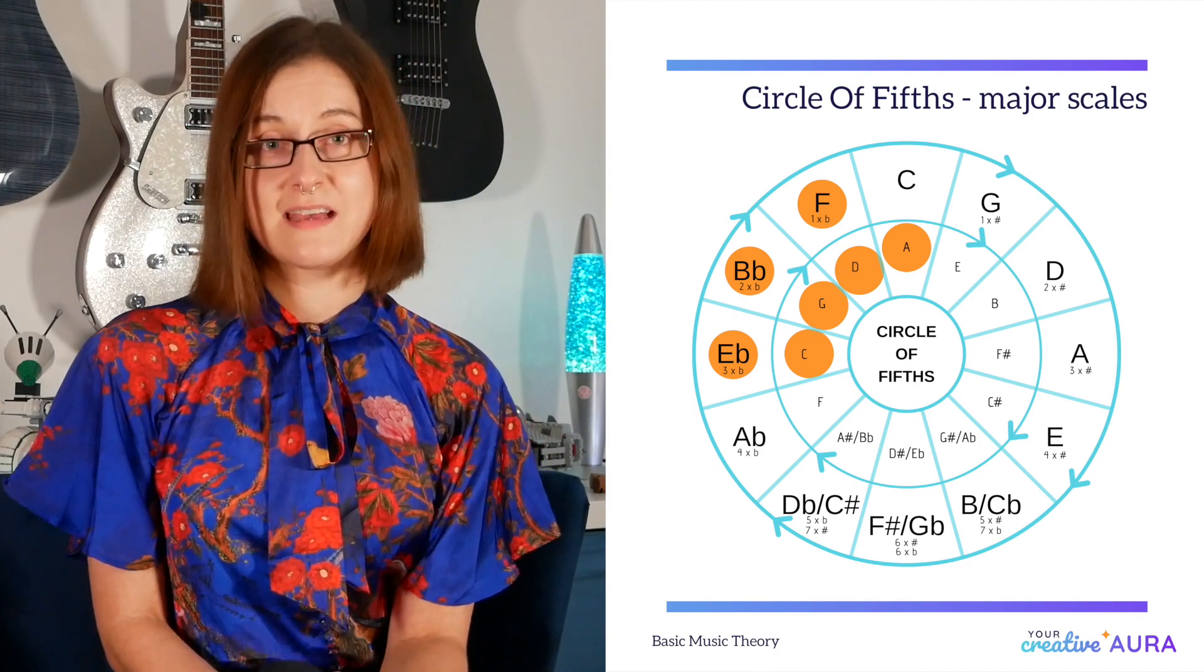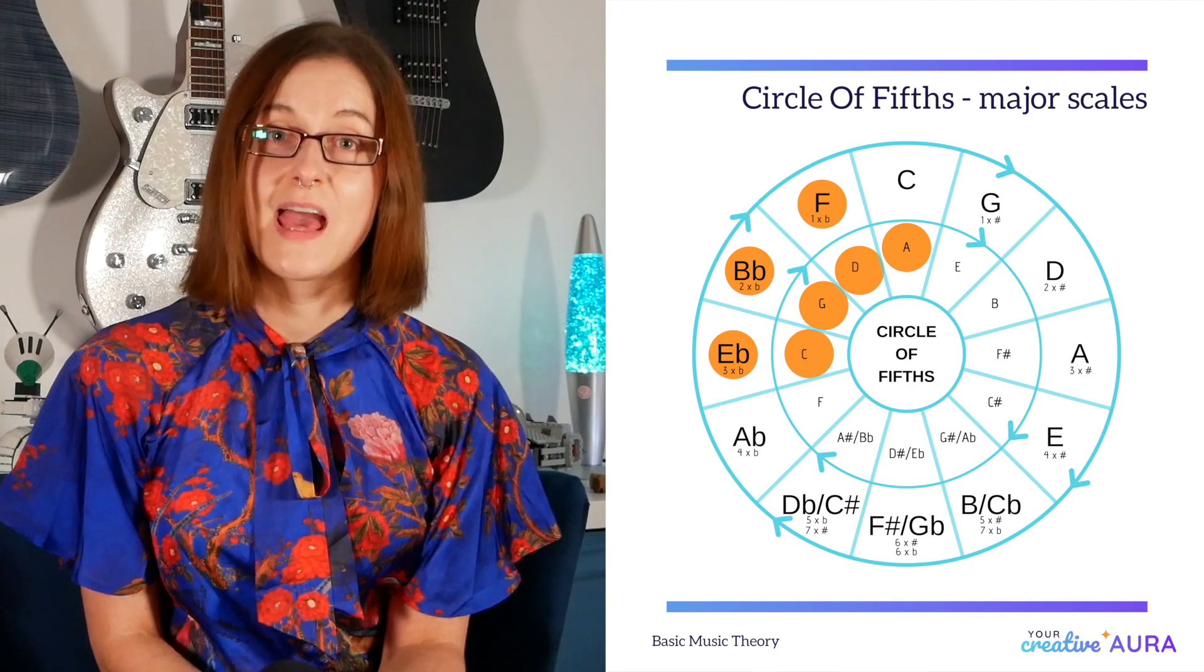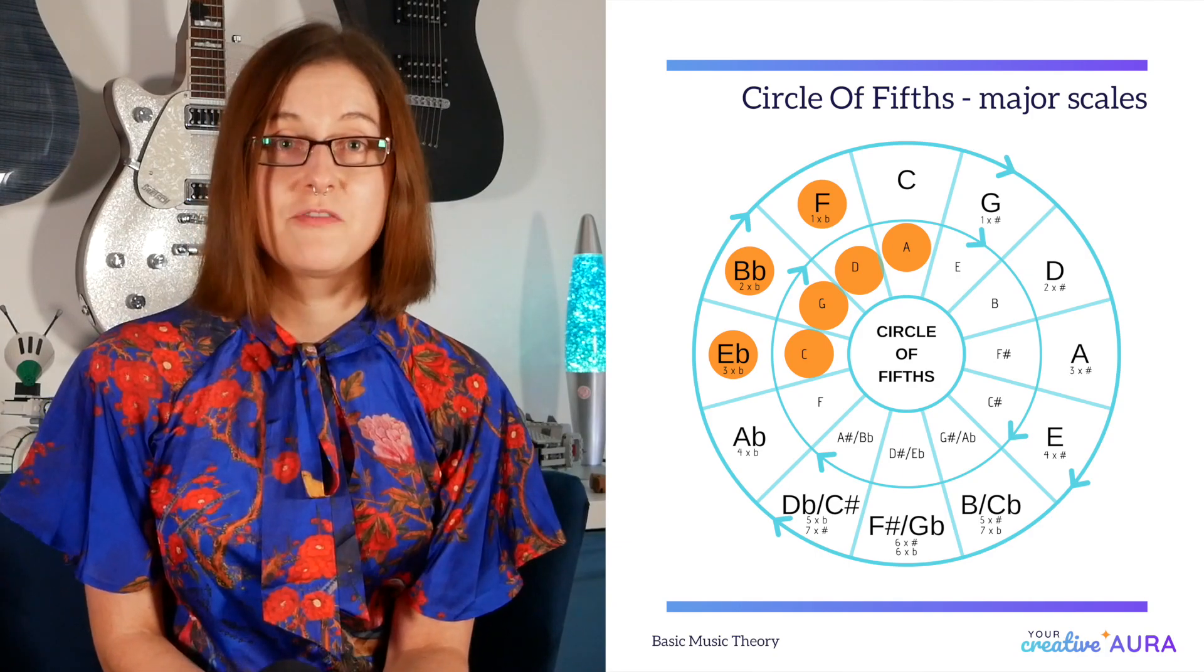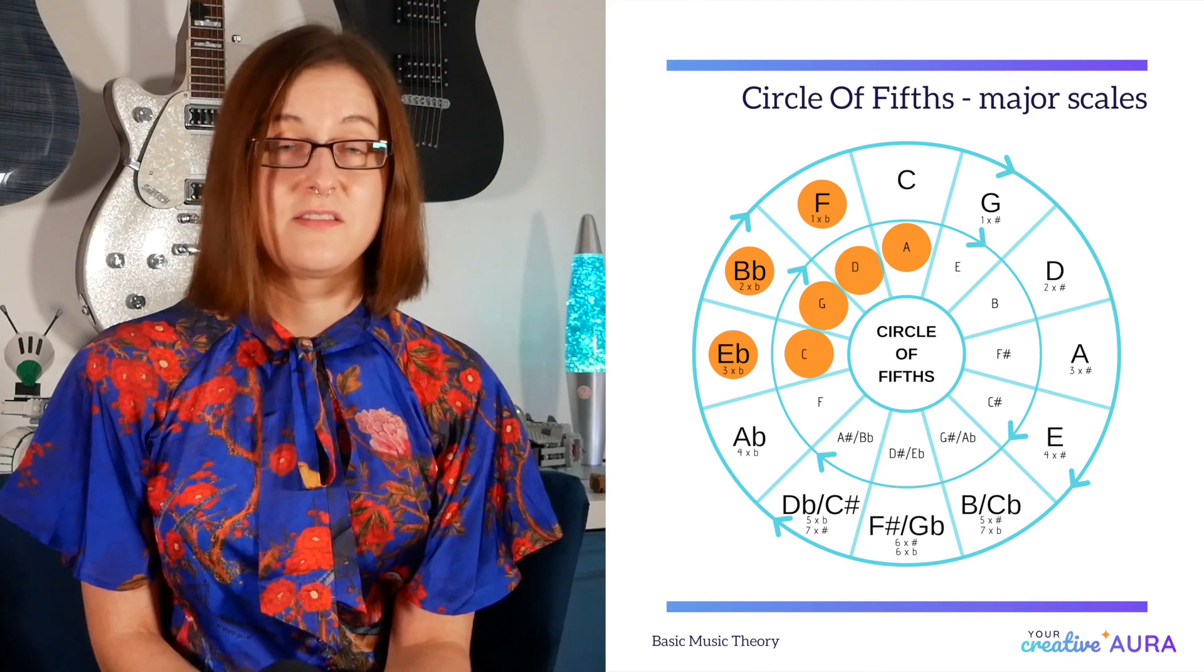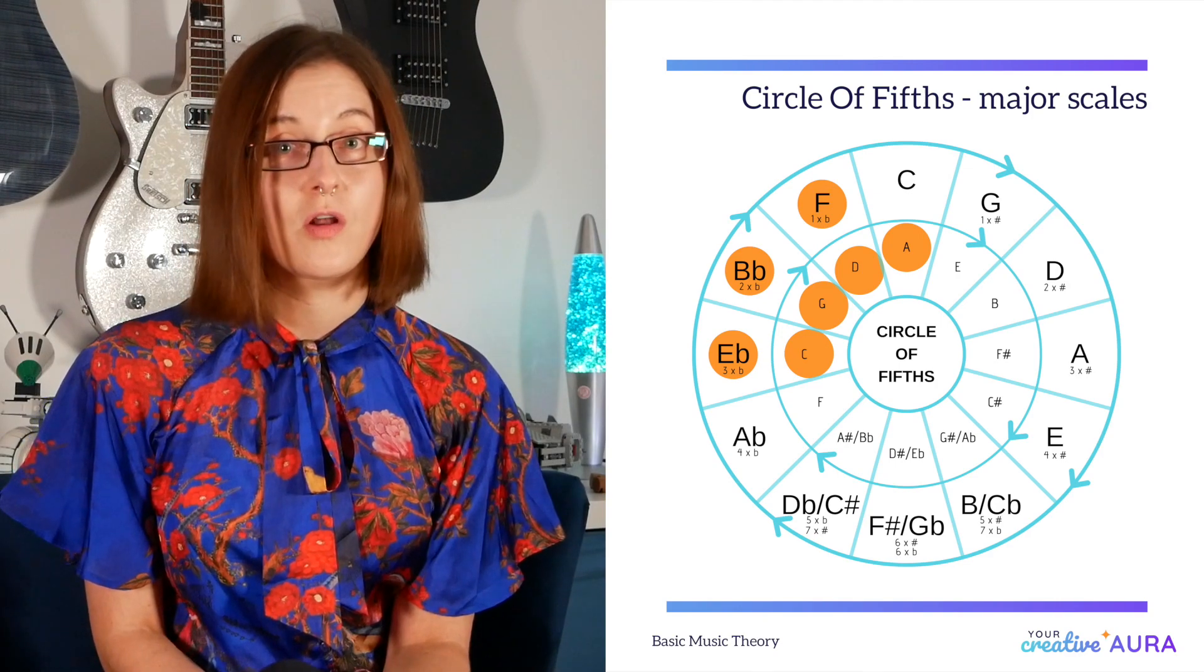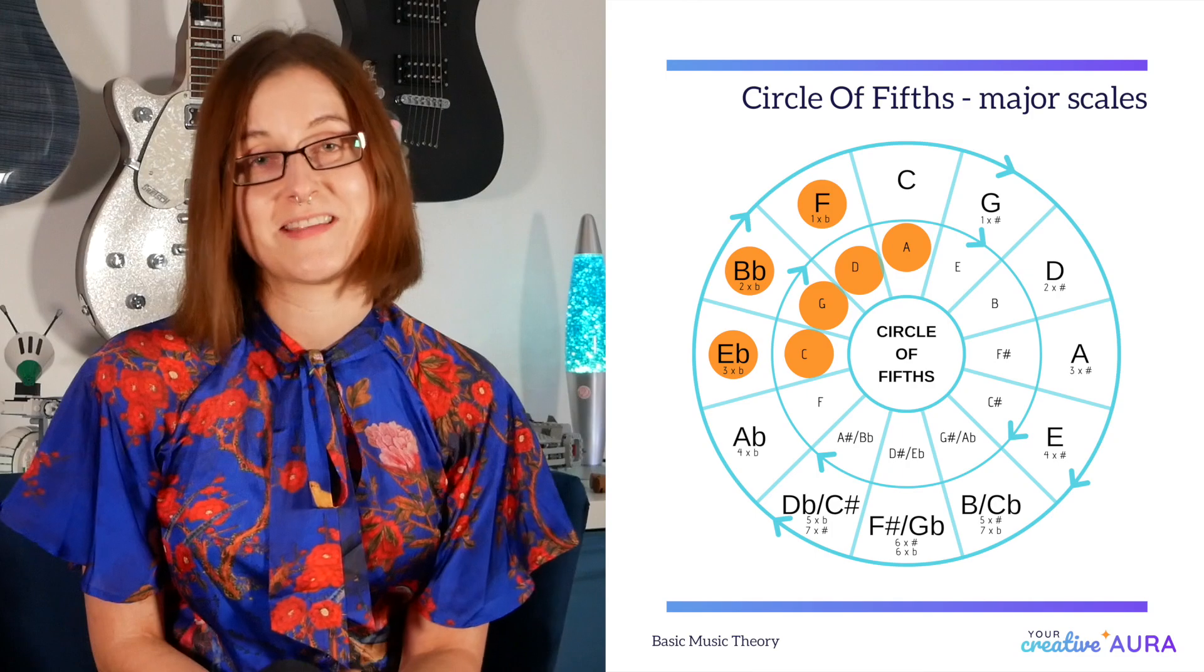Now you can do the exact same thing for minor scales. Find the five closest notes and the seventh is the note on the inner circle going clockwise. So it's the exact same process.